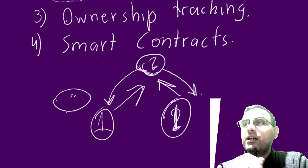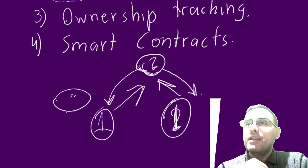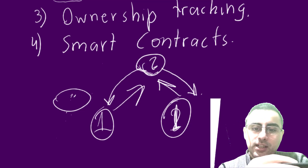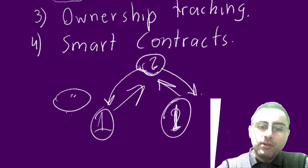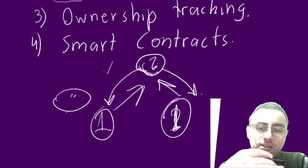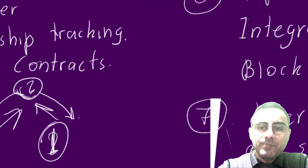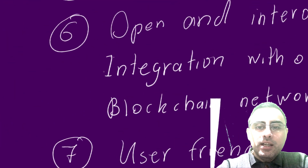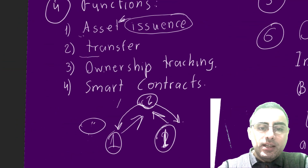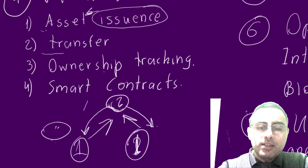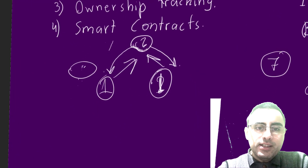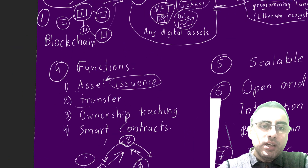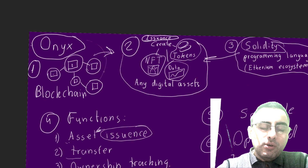So the smart contract has instructions and acts according to those instructions. That's a very simple example of a smart contract, but you can make these contracts much more complex and use them in lots of different situations.